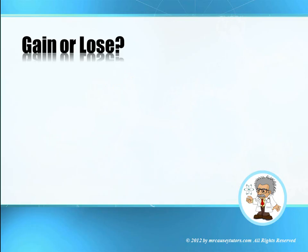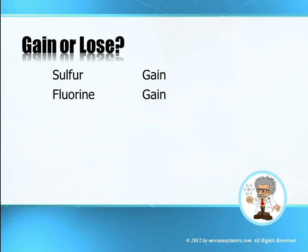Let's take a little test — gain or lose? Sulfur: look at your periodic table — it will gain. Find fluorine, number nine — it will gain; it's easier to gain one than to lose seven. Potassium, number 19: look at it on the left-hand side — it's going to be easier to lose one than to gain seven.